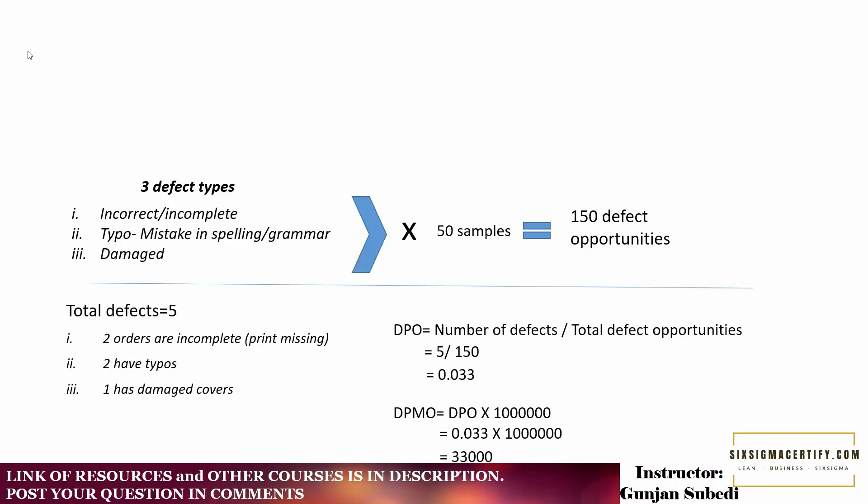Next, let us understand the DPMO with the example. We have the same example that we studied in the DPO section. Our DPO, which was the ratio of number of defects by total defect opportunities, was 0.033. And our DPMO is simply the DPO multiplied by 1 million, which gives us 33,000. So can you guess what is our Sigma level?